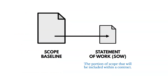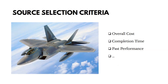The procurement statement of work is a portion of the scope baseline pulled out to include in a contract — it defines the work we want an outside vendor to perform. Source selection criteria — the way we score and rate sellers — are based on things like overall cost, completion time, past performance, and so on.